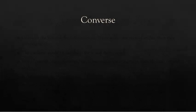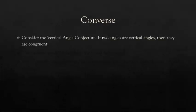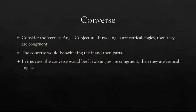Remember converses? Consider the vertical angle conjecture: if two angles are vertical angles, then they are congruent. The converse would be switching the if and then parts. So in this case, the converse would be: if two angles are congruent, then they are vertical angles.